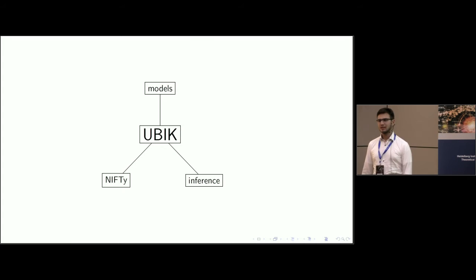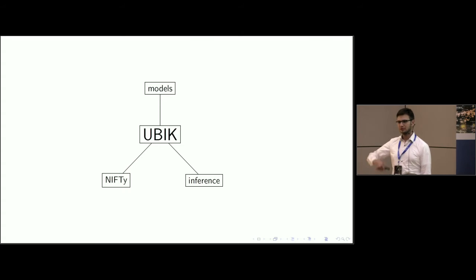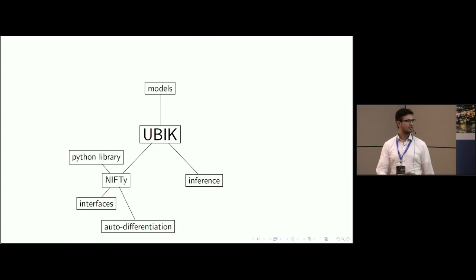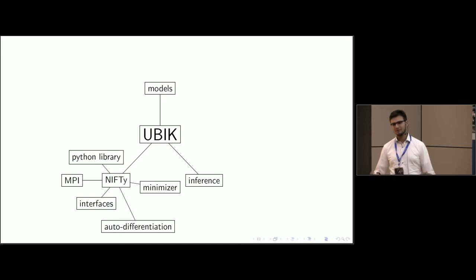So now, what is Ubik? Ubik is basically a toolkit on how to plug together such algorithms. It consists of three different parts. On the one side is the numerical reality. We have a Python package for that where you can plug together such an algorithm. On the other side, how to solve such a problem. This is the inference part. And then some libraries where you have models in there which you can plug together. So what is Nifty? Nifty is a Python library which defines all the interface that nothing can go wrong. It supports auto-differentiation. It supports MPI parallelization. It implements its own minimizers and a lot more.